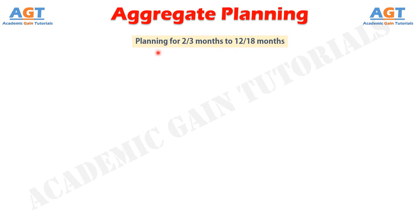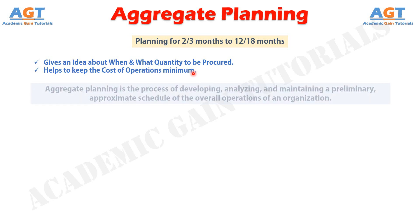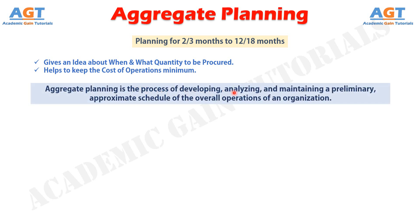An operational activity which does an aggregate plan for the production process, in advance of 2 to 18 months, to give an idea to management as to what quantity of materials and other resources are to be procured and when, so that the total cost of operations of the organization is kept at minimum over that period. Aggregate planning is the process of developing, analyzing, and maintaining a preliminary, approximate schedule of the overall operations of an organization.